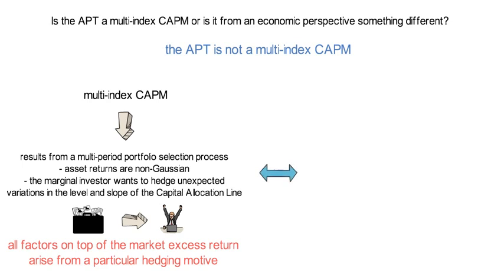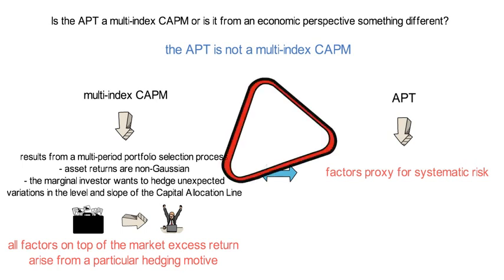In contrast, factors in the APT are proxies for systematic risk in the economy. Economically speaking, that is a very different channel, even though both linear factor models could look identical from a statistical point of view.